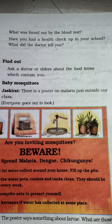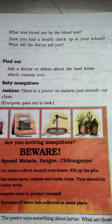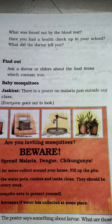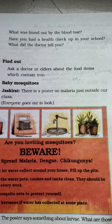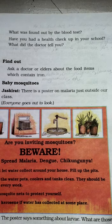Foods like these contain iron. There is a poster on malaria just outside our class. In your book you can see it — 'Are you inviting mosquitoes? Beware! This spreads malaria, dengue, and chikungunya.' How can we stop malaria? By not letting water collect in your house, filling up ditches, keeping water tanks and coolers clean — they should be dried every week. Use a mosquito net while sleeping, and spray garlic solution in collected water in surrounding areas.